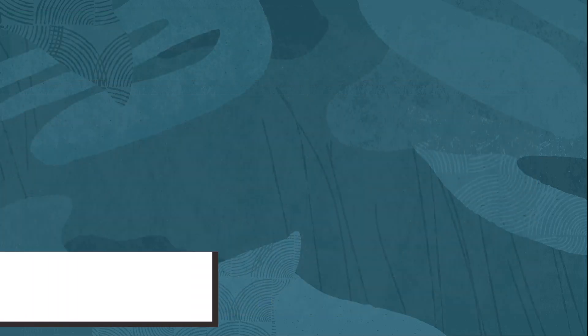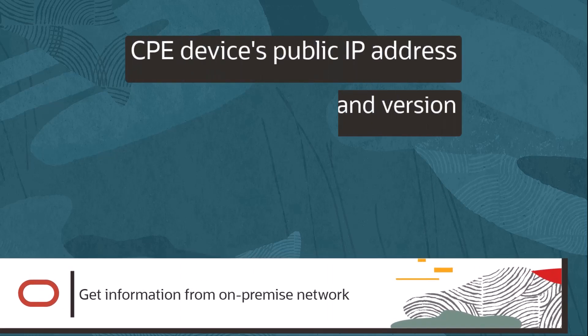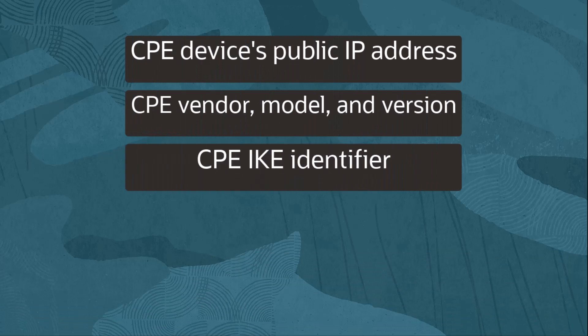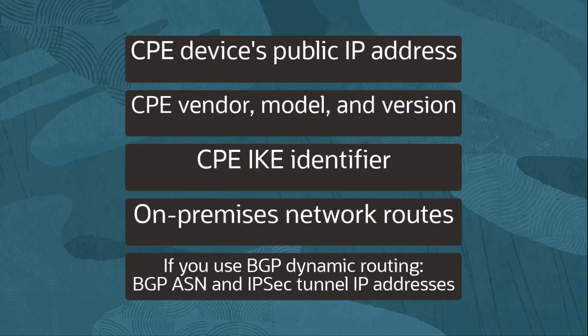First, let's collect needed configuration information from the on-premises network. You will need the CPE device's public IP address, CPE vendor model and version, CPE IKE identifiers, on-premises network routes, and if you use BGP dynamic routing, a few specific IP addresses.